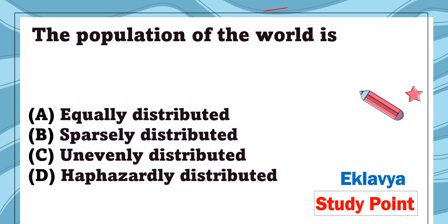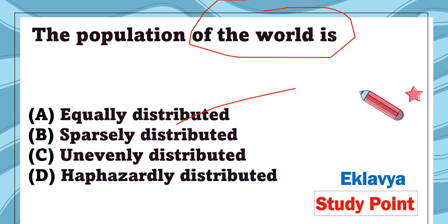Question 4: The population of the world is — equally distributed, sparsely distributed, unevenly distributed, or dispersedly distributed. The correct answer is unevenly distributed.